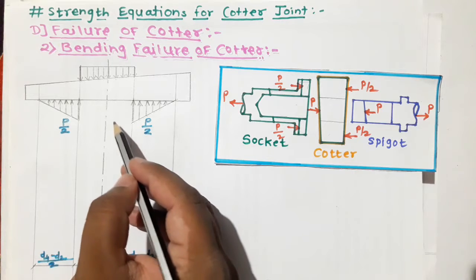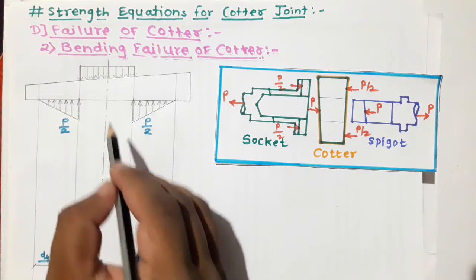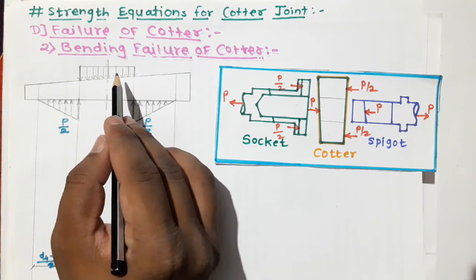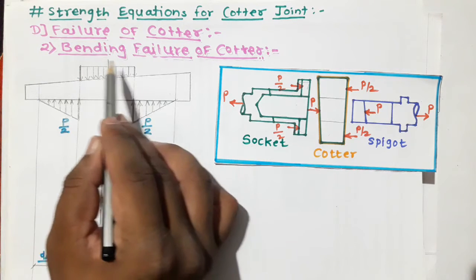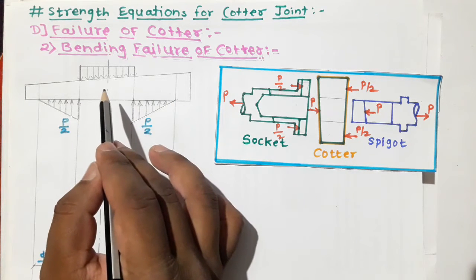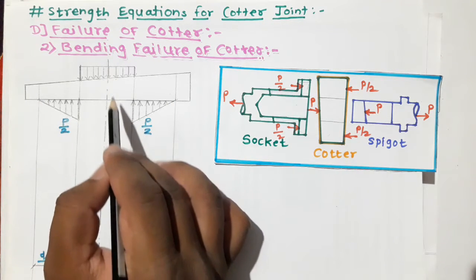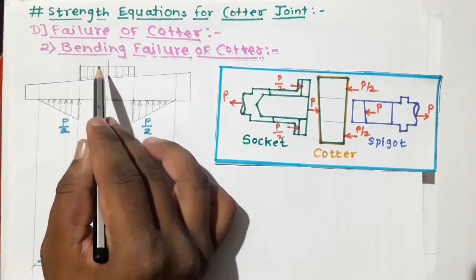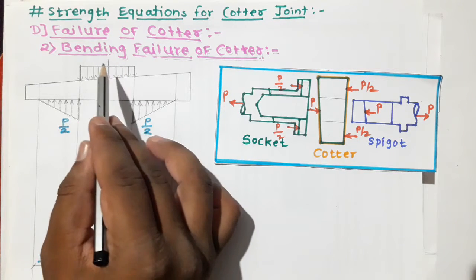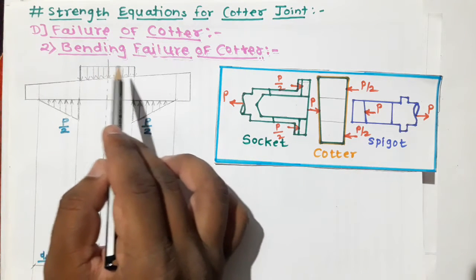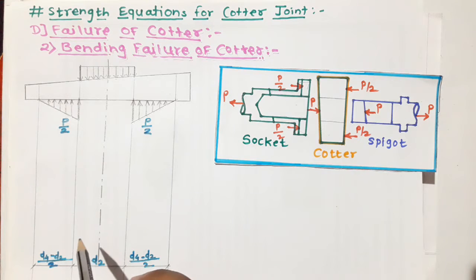To maintain symmetry of forces with respect to the center line, the single UDL of magnitude P is divided into two UDLs of magnitude P/2 each. Since the base of the single UDL is D2, dividing it into two UDLs splits the base into D2/2 and D2/2.